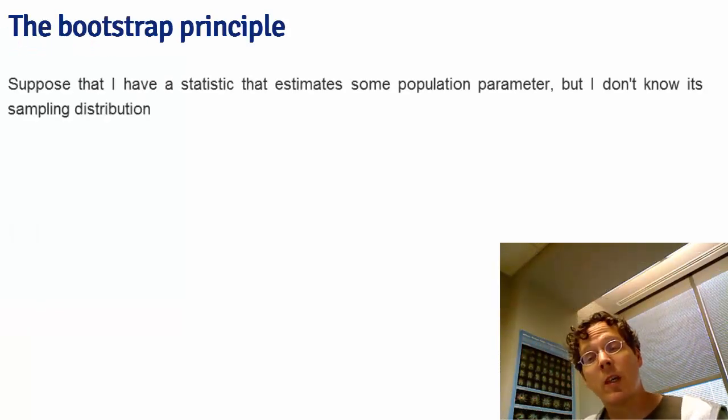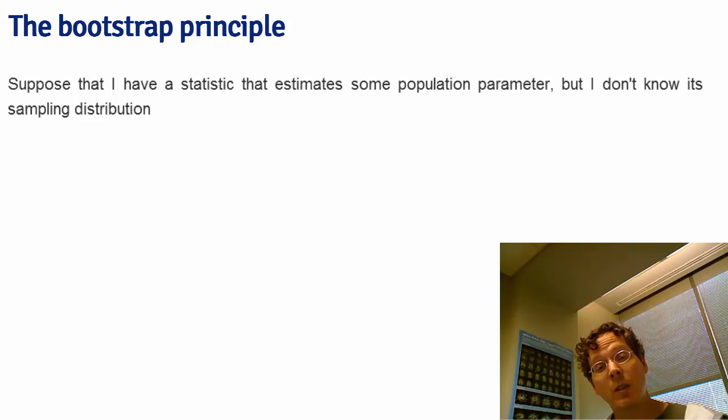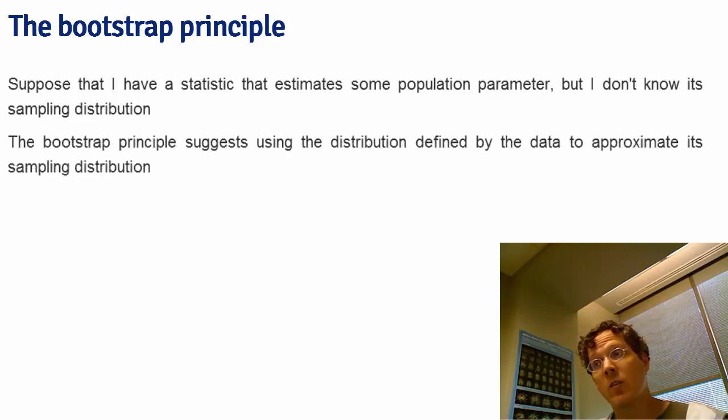So the Bootstrap Principle is if you have a statistic that estimates some population parameter that you're interested in, but you don't know that statistic's sampling distribution, then the Bootstrap Principle is simply to use the distribution defined by the observed data to investigate that sampling distribution, an estimate of that sampling distribution.